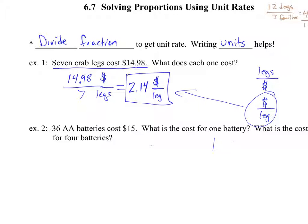But for me, I really like seeing the units because when I look at the units, it helps me see, do I do 7 divided by 14.98 or 14.98 divided by 7. Use the units to figure out what order to do it in. If you wanted dollars per leg, so you have to do the cost in dollars divided by the number of legs.